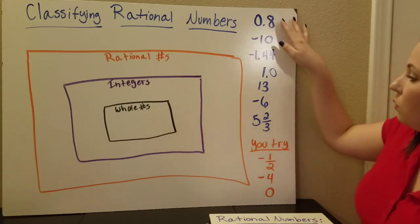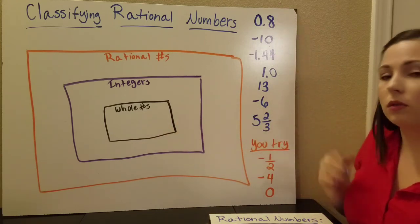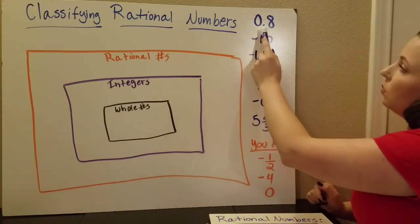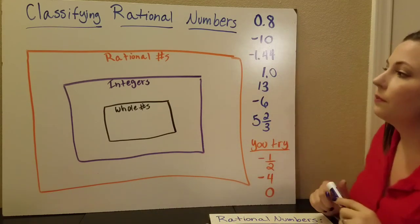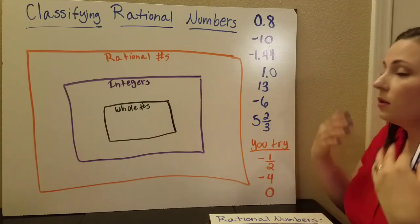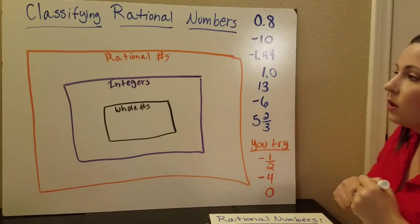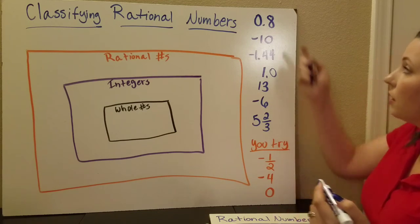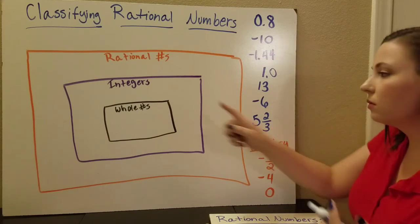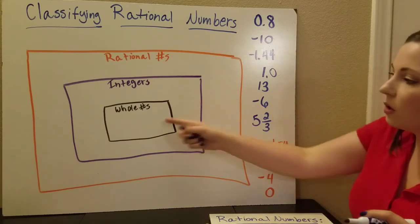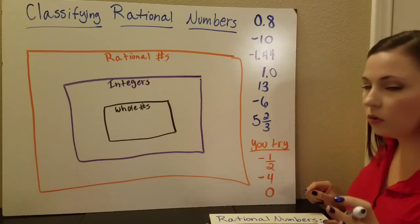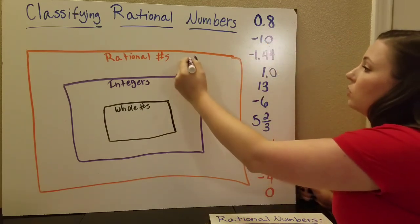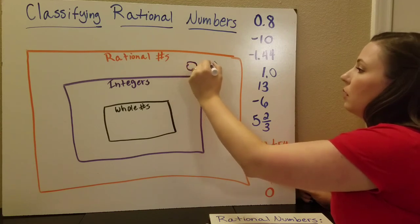Let's classify some numbers. First one: 0.8. It's a decimal — it is a terminating decimal, so it's going to be a rational number. It's not an integer because integers have no decimals. It's not a whole number either — again, no decimals. So it's got to be a rational number. 0.8 goes right there.